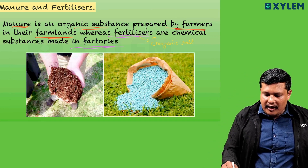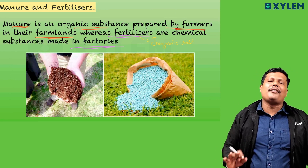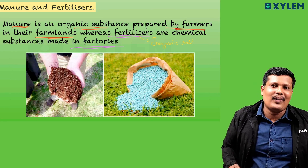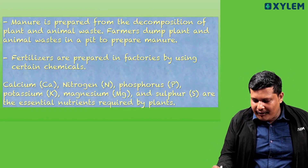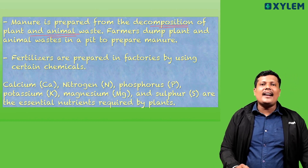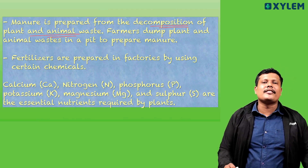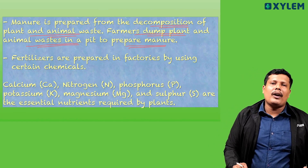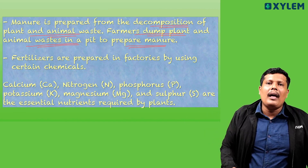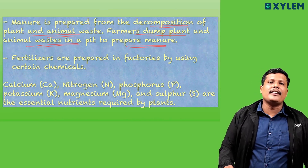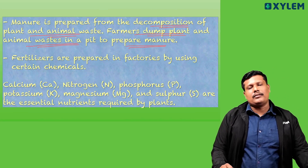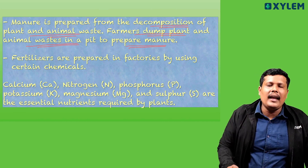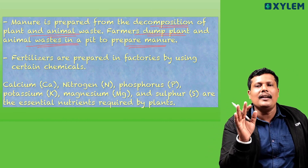Here in this picture you can see manure as well as fertilizer. This is a major difference between manure and fertilizer. Both enhance soil nutrients. Manure is prepared from the decomposition of plant and animal waste — that is organic. Farmer dumps plant and animal waste in a pit to prepare manure. Vegetable waste, plant waste, animal waste, animal excreta, cow dung — all dumped, and ultimately compost is produced and manure is produced, and it is used to improve agricultural soil nutrients.